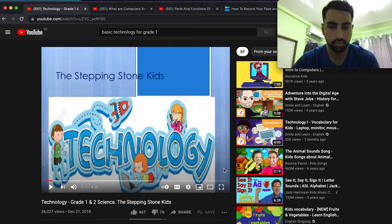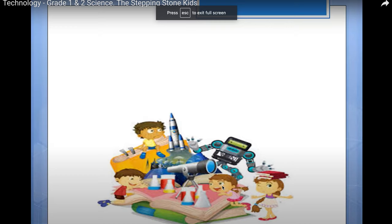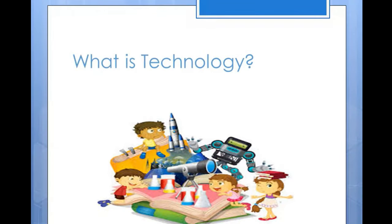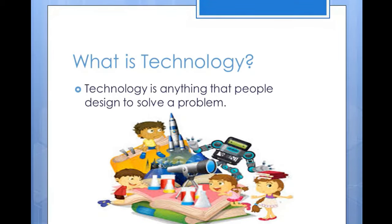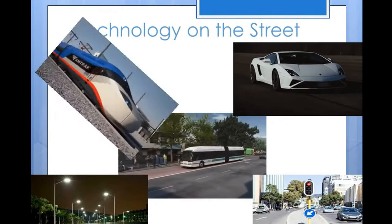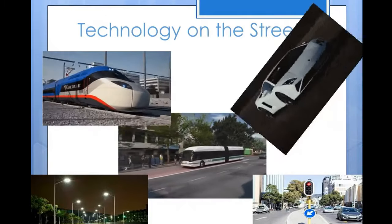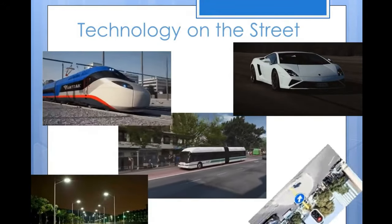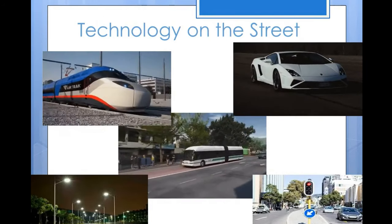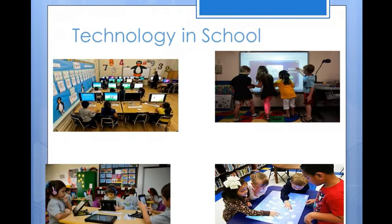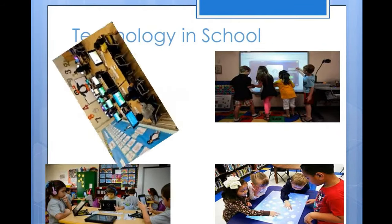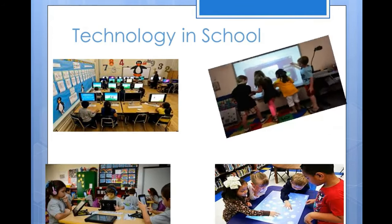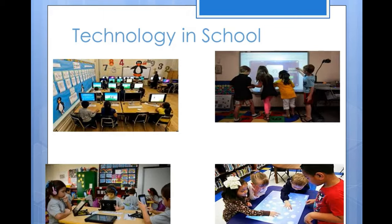What is technology? Technology is anything that people design to solve a problem. Technology on the streets includes things like trains, cars, buses, street lamps, and traffic lights. Technology in school includes computers, smart boards, tablets, and interactive desks.